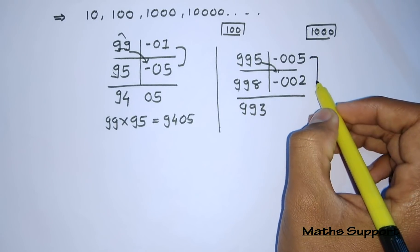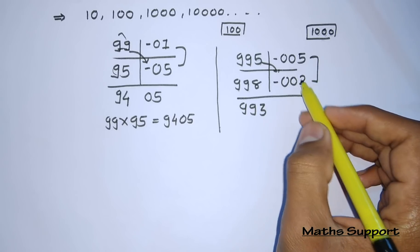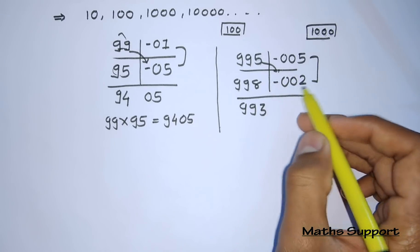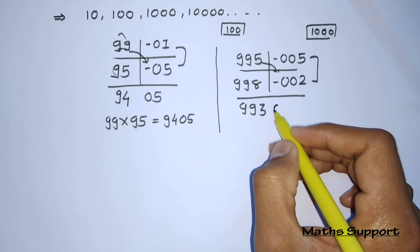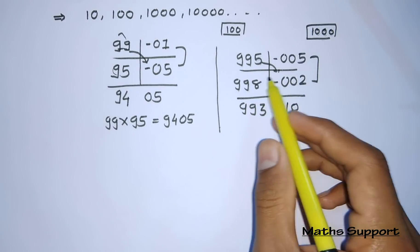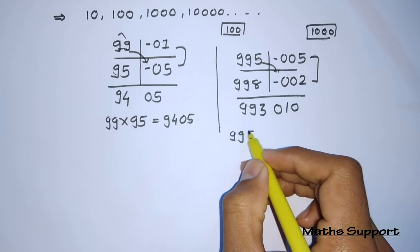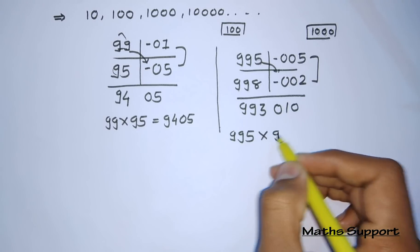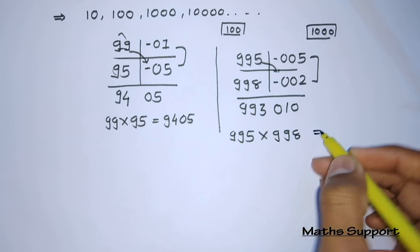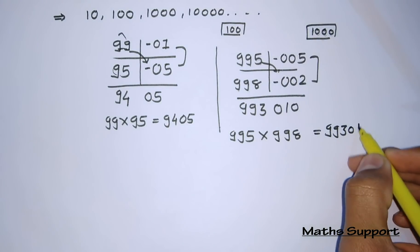Now the multiplication of the differences: 5 times 2 equals 10. We need to write 10 in 3 digits because this is a 3-digit base, so that is 010. So 995 times 998 equals 993010. That's how we find the multiplication.